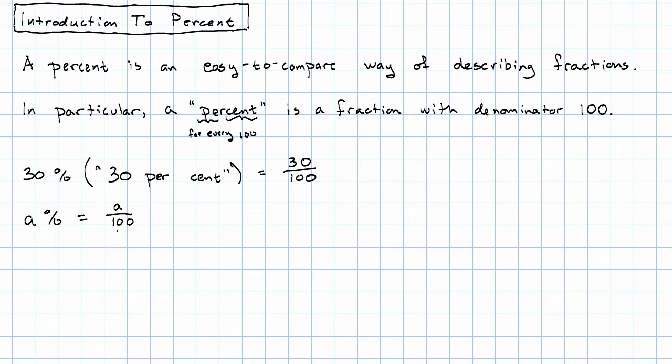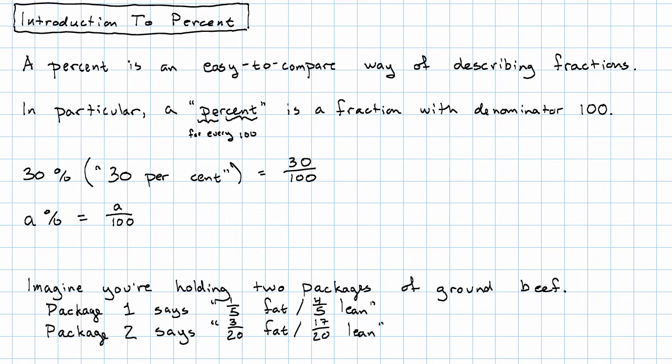Why would we want this? Imagine you're standing in a grocery store and you're holding two packages of ground beef. Package number one says on the wrapper, one fifth fat, four fifths lean. The other package says three-twentieths fat, seventeen-twentieths lean.